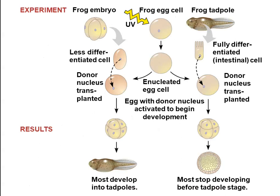To transplant the nucleus, you first have to irradiate or destroy the original nucleus in the recipient cell, which provides the cytoplasm and other cellular machinery. When a nucleus from a frog embryo that has not fully differentiated is transplanted, tadpole development proceeds well. When the nucleus comes from a more fully differentiated cell, tadpole development is much less likely to succeed.